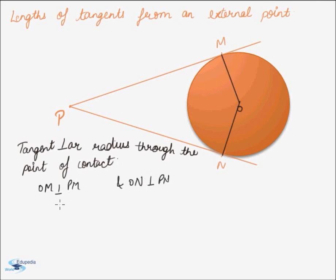Or we can say that the angles ∠PMO and ∠PNO are 90 degrees each.